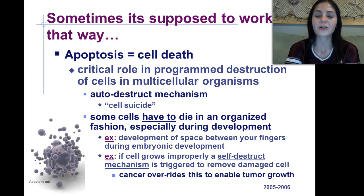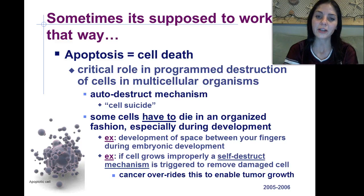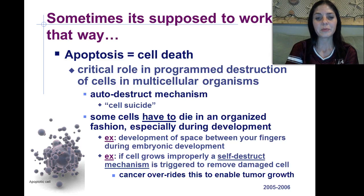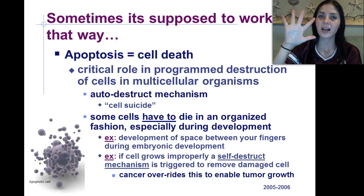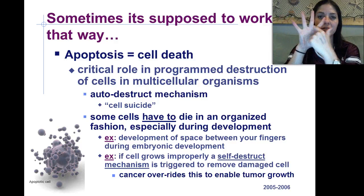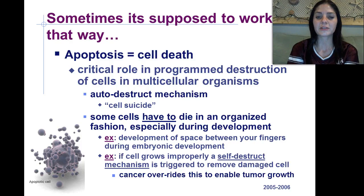Apoptosis is basically an autodestruct mechanism or cell suicide. Some cells have to die in an organized fashion, especially during embryological development. For example, the spaces between your fingers require cells to die in order to be formed. Also, if a cell grows improperly, a self-destruct mechanism is triggered to remove that damaged cell.